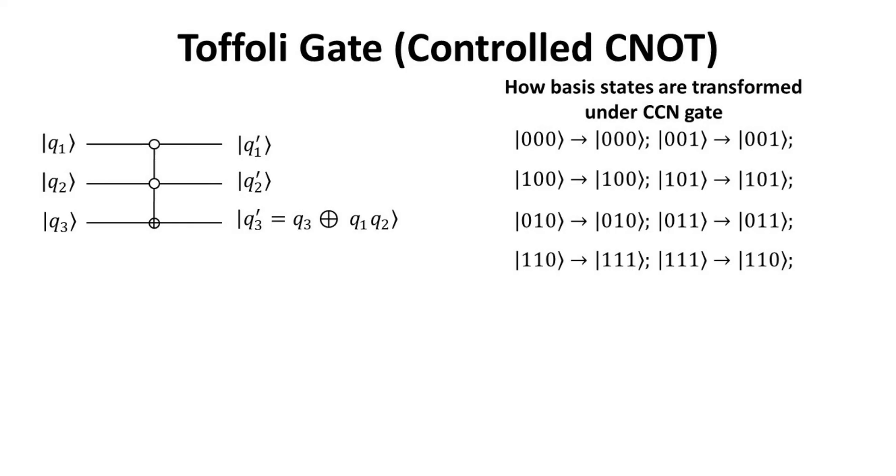From the truth table of the Toffoli gate, we can see that this is how the basis states are transformed. Note that when the first two qubit states contain a 0 state, the third qubit state remains the same. This is again consistent with the boolean operation of the Toffoli gate, that is XOR of Q3 with the product of Q1 and Q2.